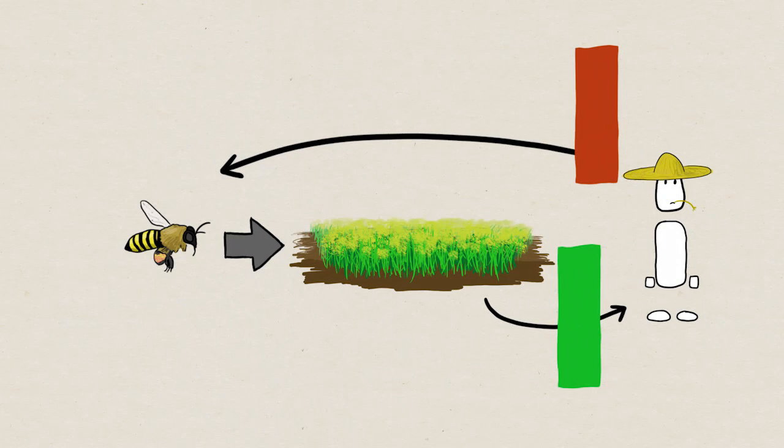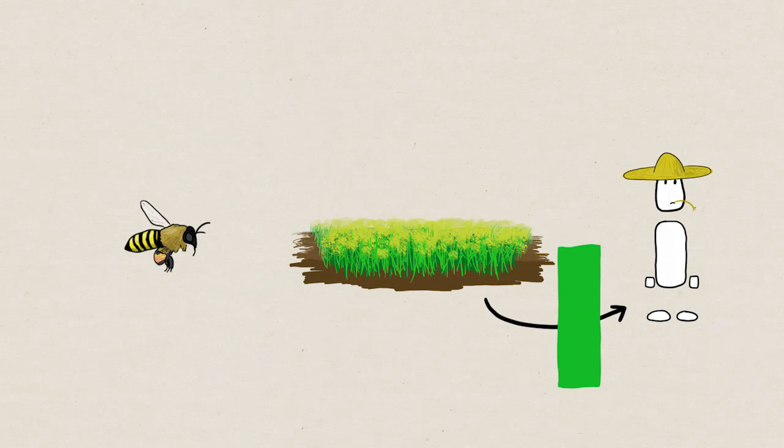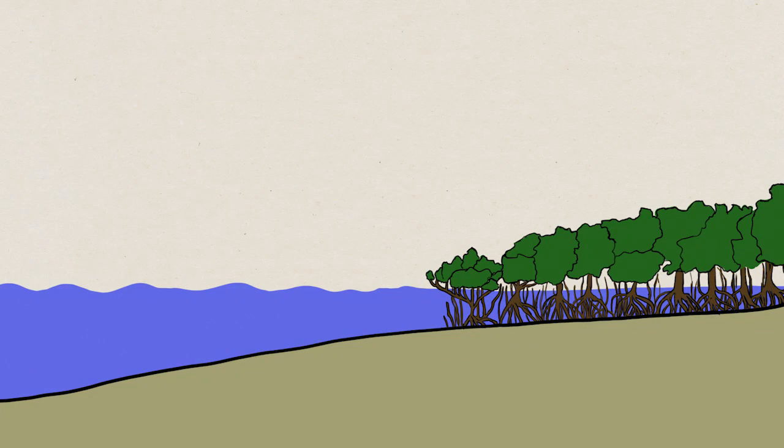Another example, if none of our crops required pollination, we would not value bees nearly as much as we do right now, even though the bees haven't changed. So for example with a forest, a mangrove on the coast will help lessen the damage from storms taking some of the impact from wind and water.